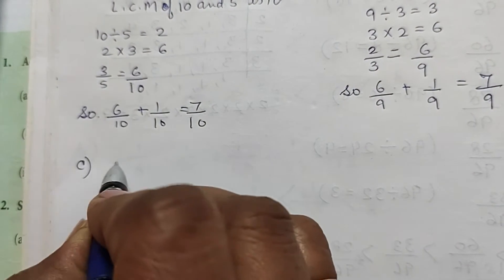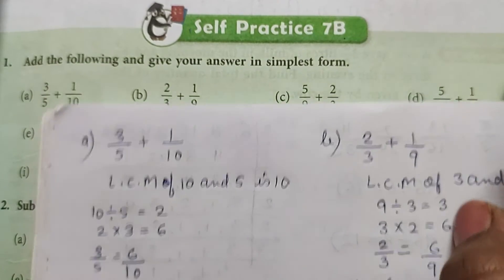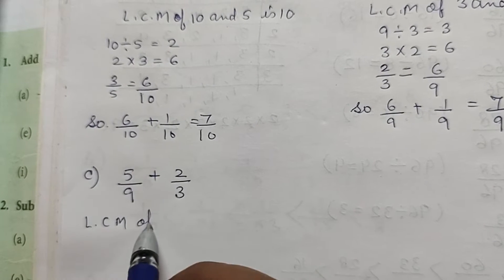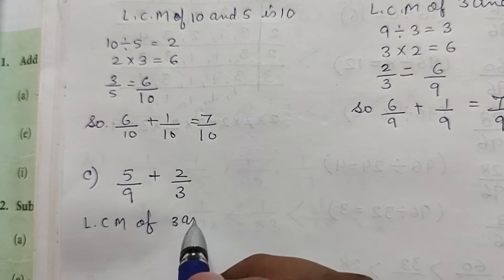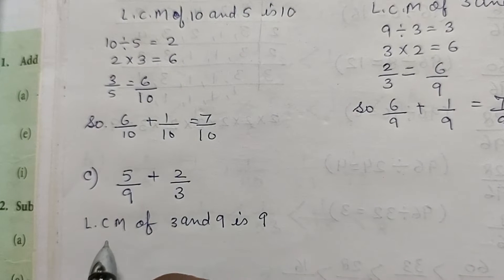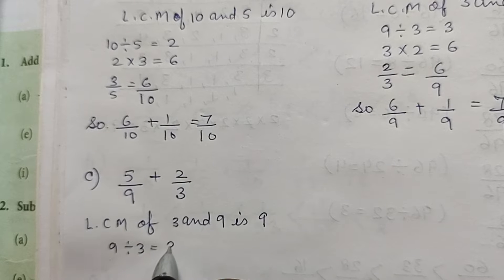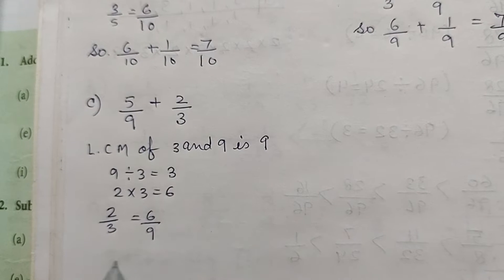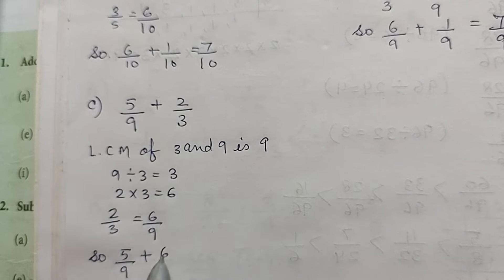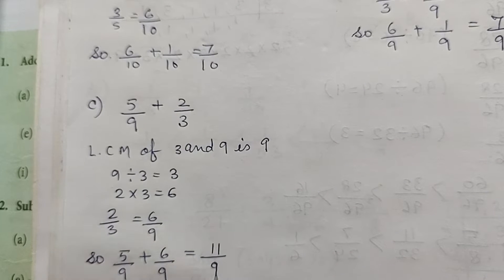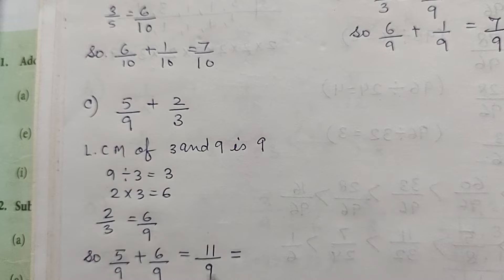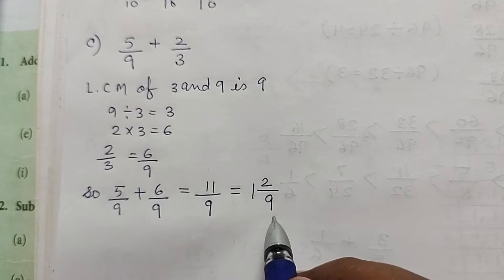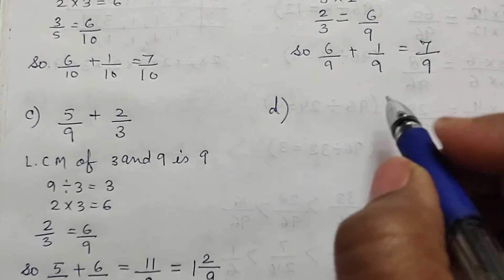Part c: 5/9 plus 2/3. LCM of 3 and 9 is 9. So 9 divided by 3 is equal to 3, and 2 multiplied by 3 is equal to 6. So 2/3 is equal to 6/9. Therefore 5/9 plus 6/9 is equal to 11/9. Converting to a mixed fraction: 9 ones are 9 and remainder 2, so the answer is 1 and 2/9.